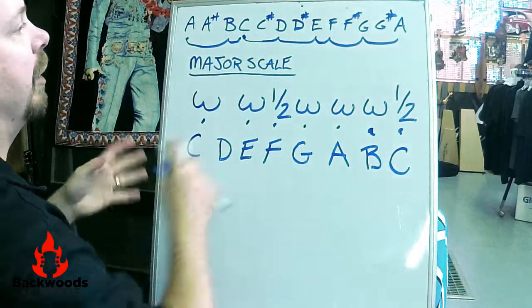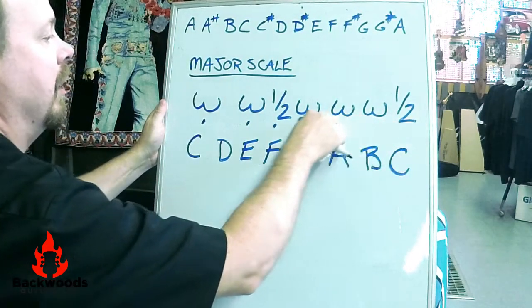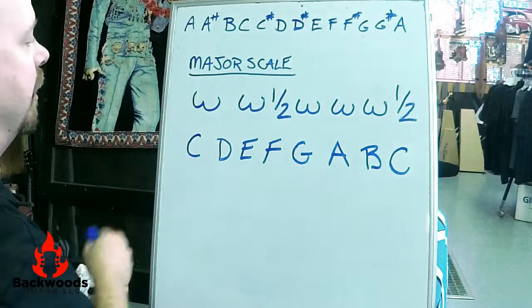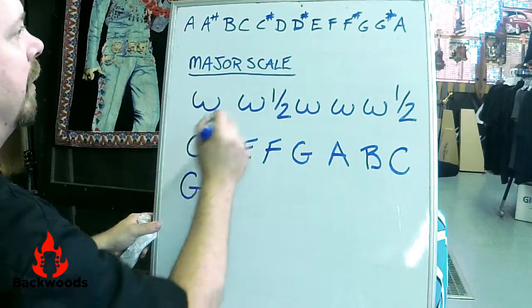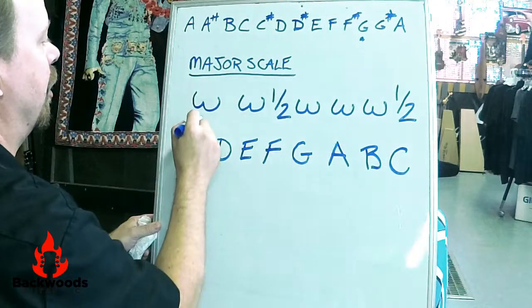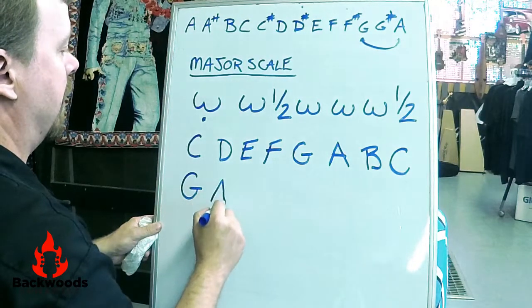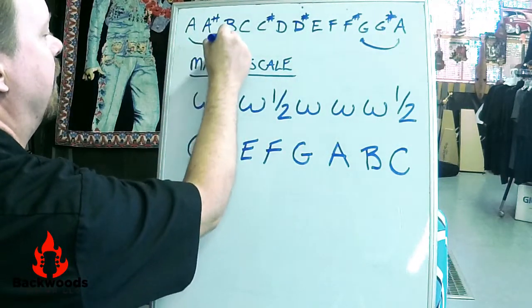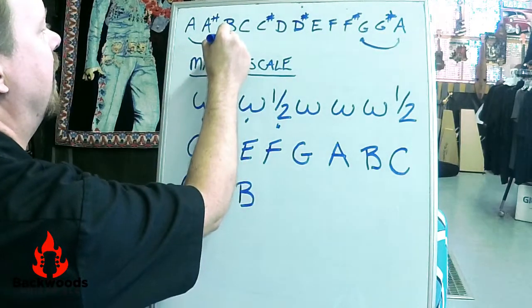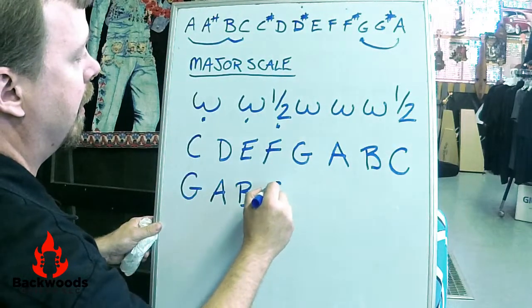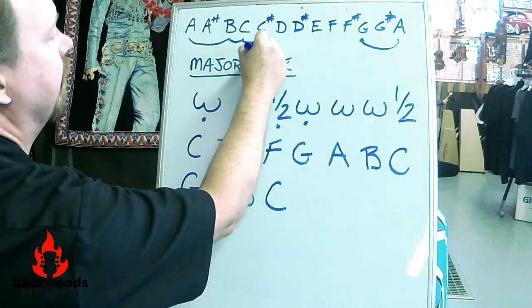Okay, let's do another one. Let's do the key of G. How about that? Let's do G and let's see what we get. Okay, where's G? We're going to start with G. Whole step from G gives you A. Whole step from A gives you B. Half step from B gives you C. Whole step from C gives you D.